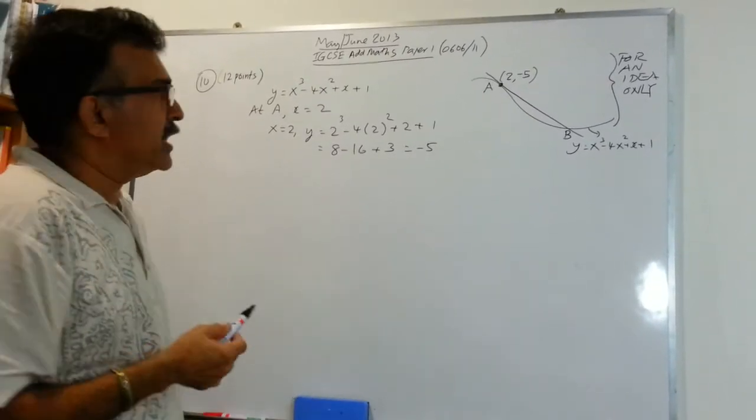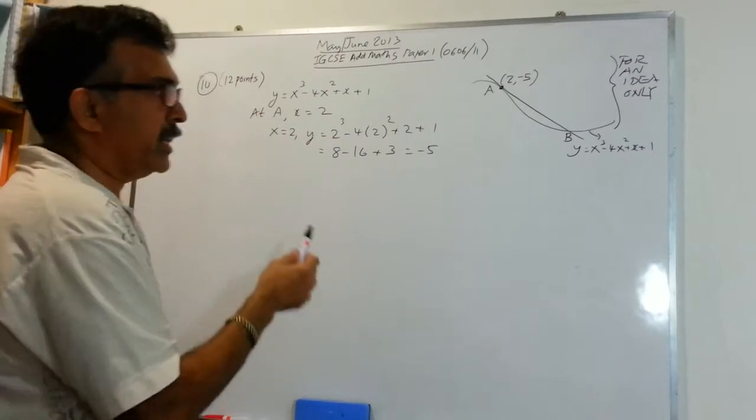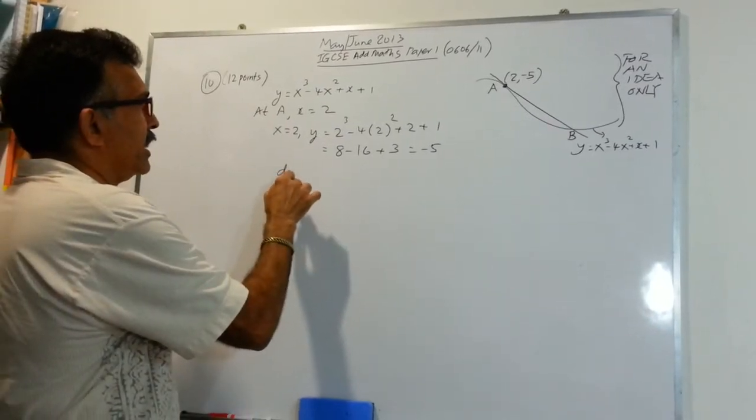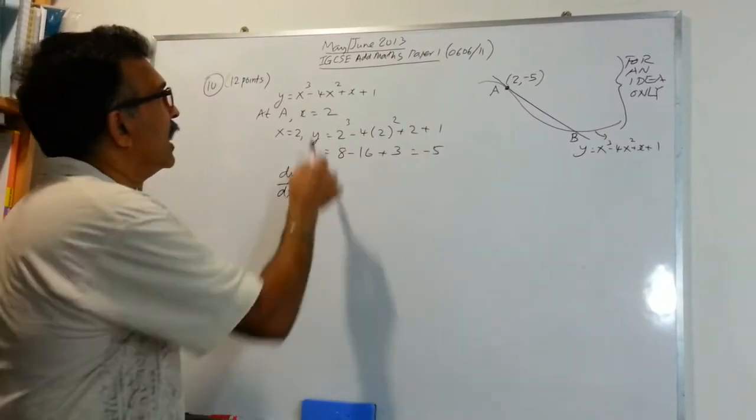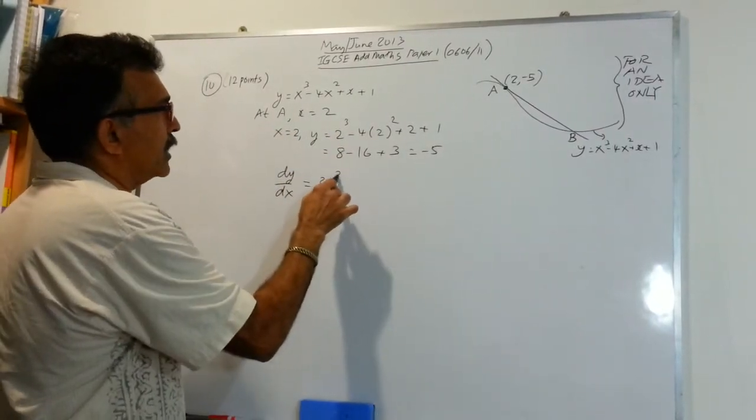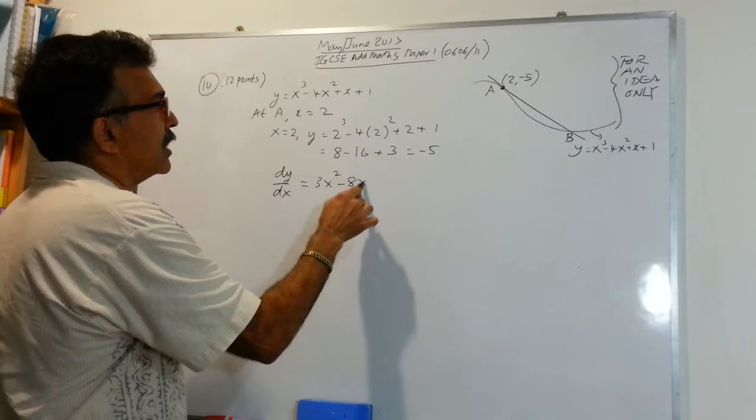To find the equation of the tangent, we need dy dx. So let's go ahead and find dy dx. So dy dx will be equals to 3x squared minus 8x plus 1.